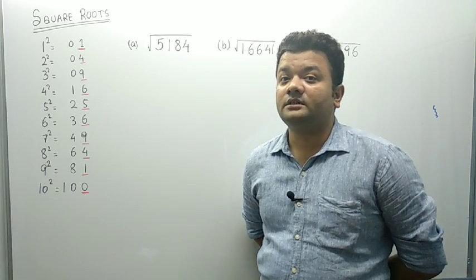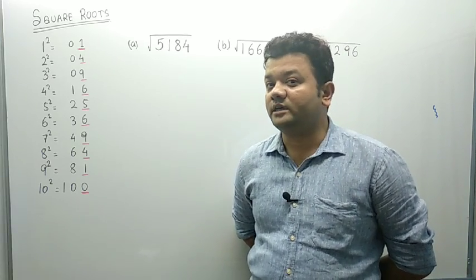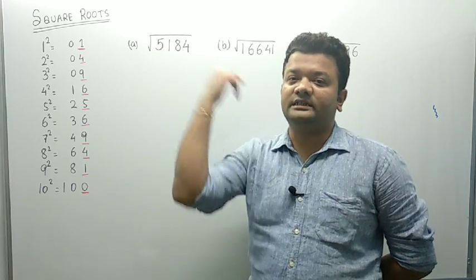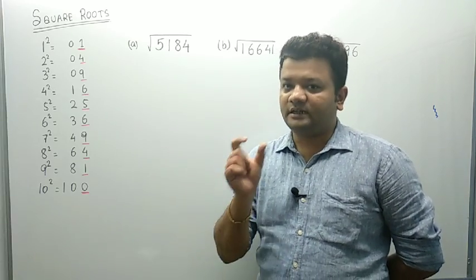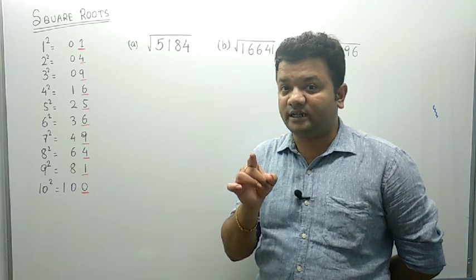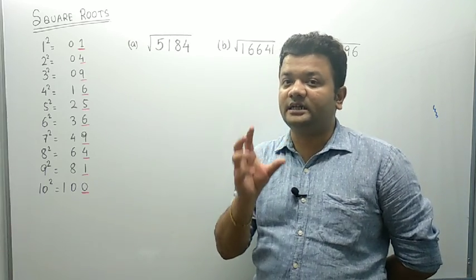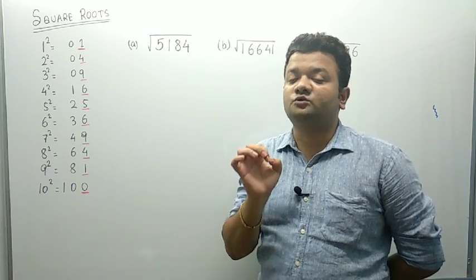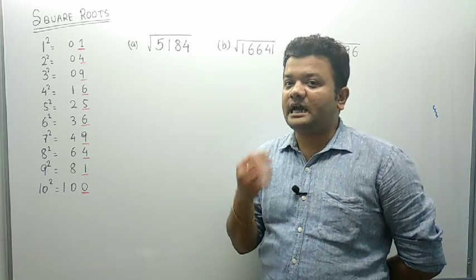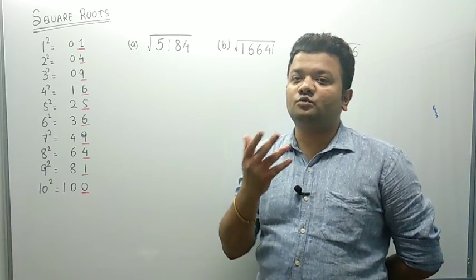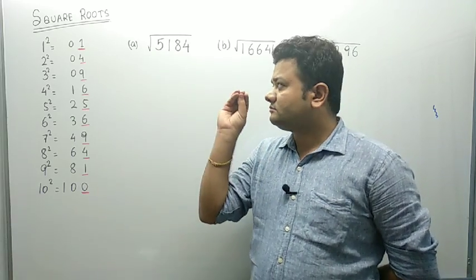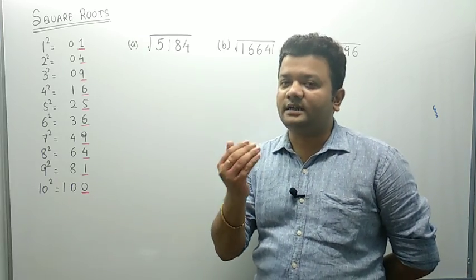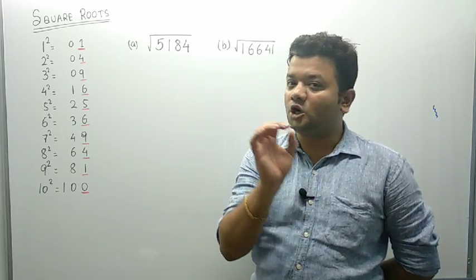Now whenever we talk about square root, you just remember one thing: square root can be calculated only for perfect square numbers. Because if I think of a random number, say 126 or 4325, the square root cannot be easily calculated since it is not a perfect square number. Now there is no basic method to identify whether a number is a perfect square number or not. Here I will be discussing how to calculate square root of a perfect square number. Later on, I will also explain for non-perfect square numbers.